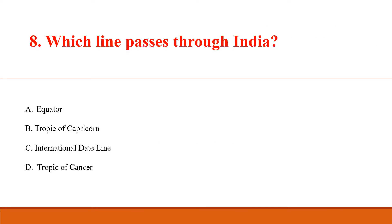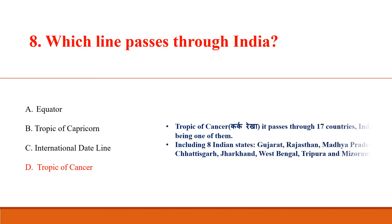Which line passes through India? Answer D: Tropic of Cancer. It passes through 17 countries, India being one of them, including 8 Indian states: Gujarat, Rajasthan, Madhya Pradesh, Chhattisgarh, Jharkhand, West Bengal, Tripura, and Mizoram.